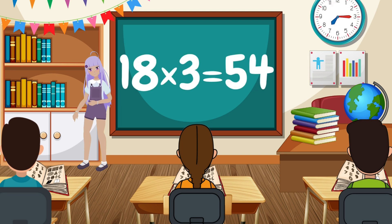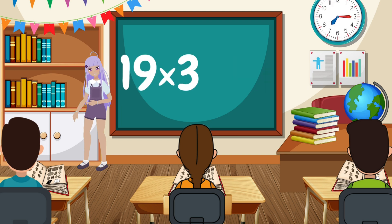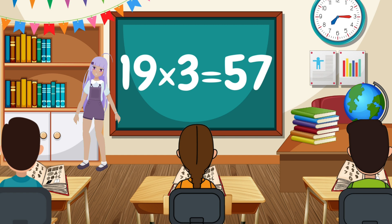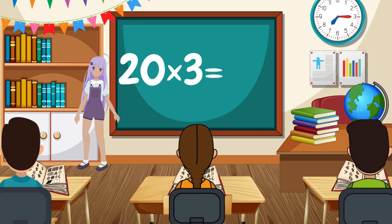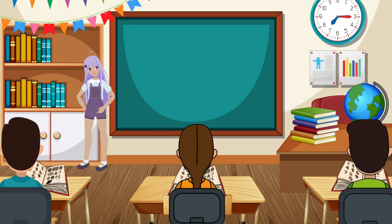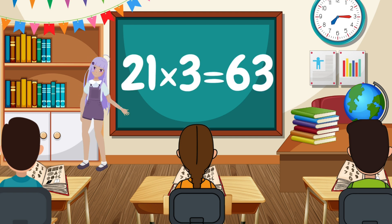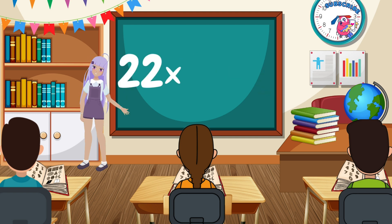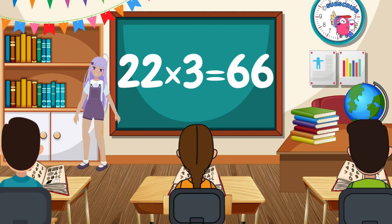19 x 3 equals 57. 20 x 3 equals 60. 21 x 3 equals 63. 22 x 3 equals 66.